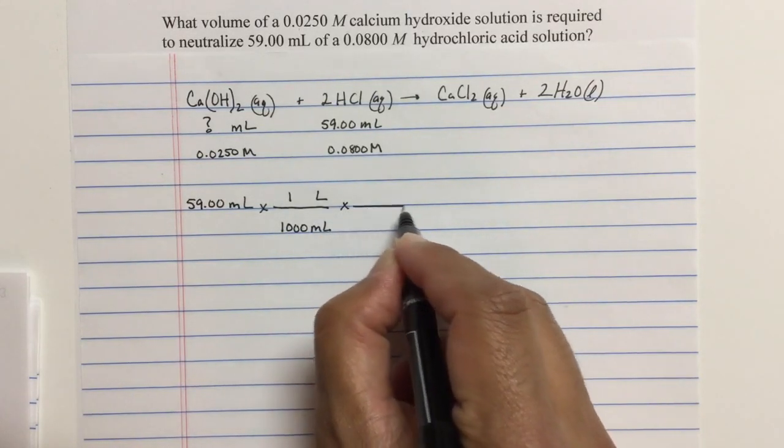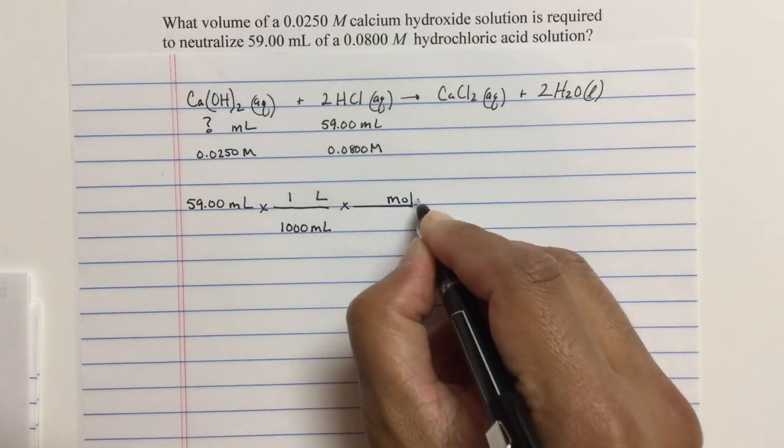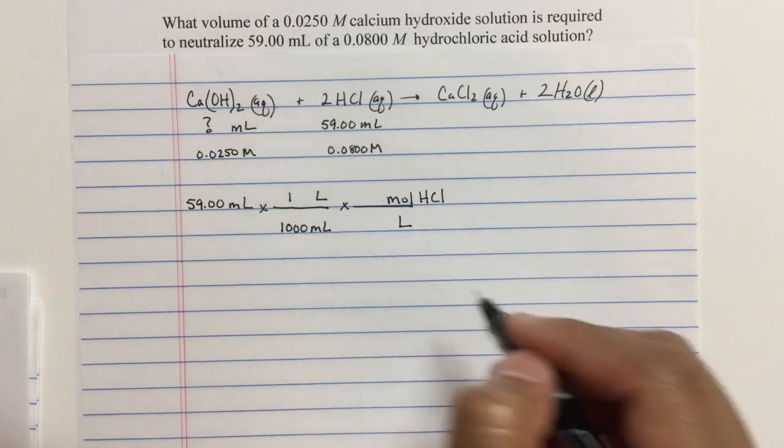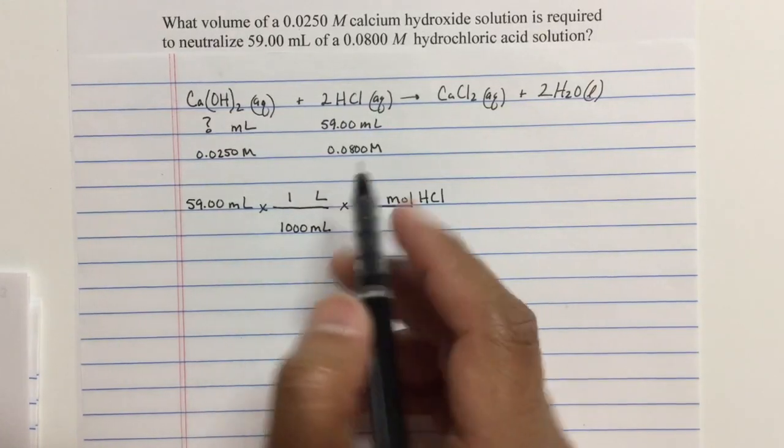Once I'm in liters, now I can use the molarity to convert liters to moles of HCl and cancel liters. Mole over liter is molarity, which is given to me.